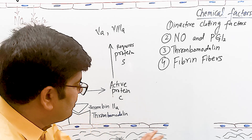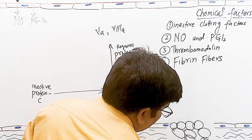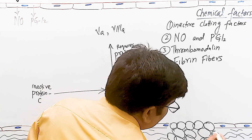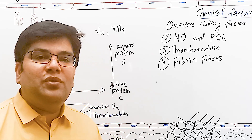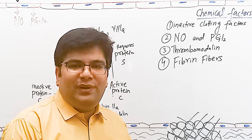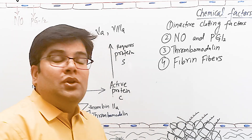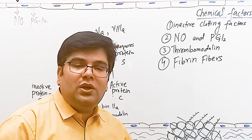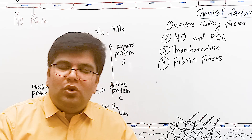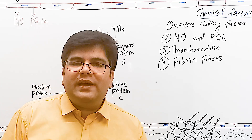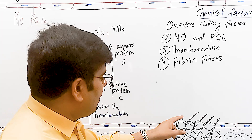Another important anticoagulant factor is fibrin fibers. When there is injury to a vessel wall, a platelet plug forms which is strengthened by fibrin fibers made from fibrinogen protein. These fibrin fibers form a meshwork running in different directions. About 85 to 90 percent of the thrombin formed during blood clotting is removed by being adsorbed onto the surface of these fibrin fibers, since fibrin fibers can absorb small thrombin molecules on their surface.